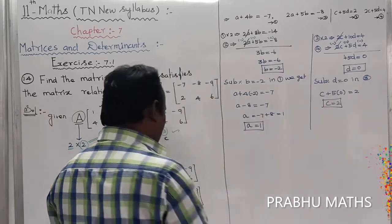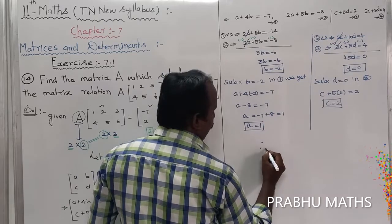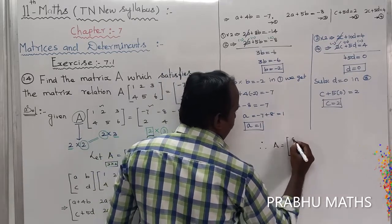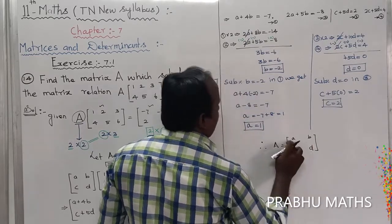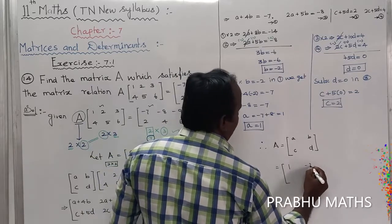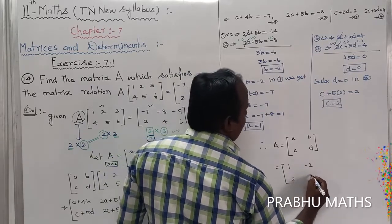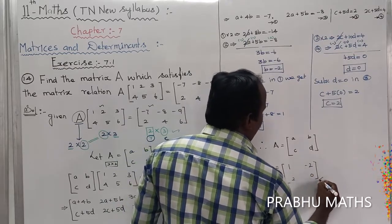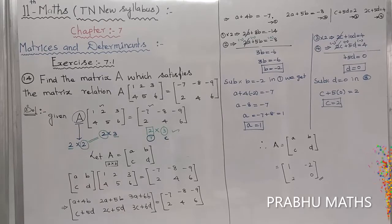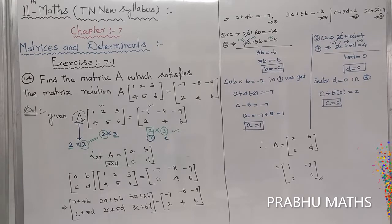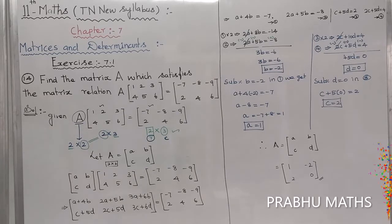Therefore the matrix A equals [A, B; C, D] = [1, -2; 2, 0]. This is the 2 by 2 matrix solution. The 14th question is now complete. The important point is the order of A matrix.